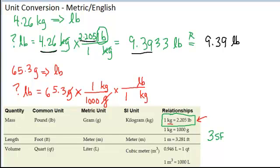And now I can use this relationship between kilograms and pounds. A one goes with the kilogram. The 2.205 goes with the pounds. My kilograms cancels. I punch that into my calculator and it tells me 0.1439865. That's before I round it.